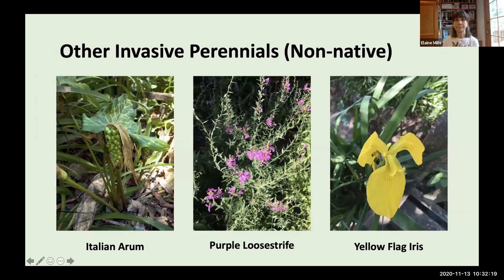A few other invasive perennials in our region include Italian Arum, Purple Loosestrife, and Yellow Flag Iris — the latter two especially problematic in wetland areas. You can learn more about these from fact sheets with links on the plant list.